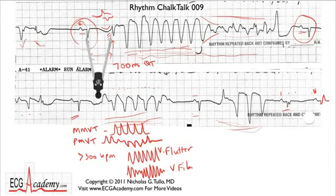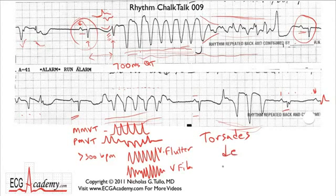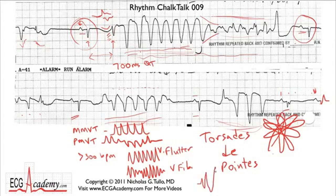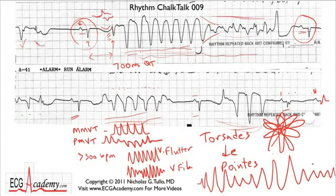With a 700-millisecond QT interval and then this tachycardia starting up, the first thing you need to think about is: you've got a long QT interval and a polymorphic VT — almost certainly this is torsades de pointes. Torsades de pointes is a French term meaning 'revolving around a point.' It's a polymorphic ventricular tachycardia named because the complexes seem to get bigger and smaller, as if the axis of the tachycardia is spinning in space.